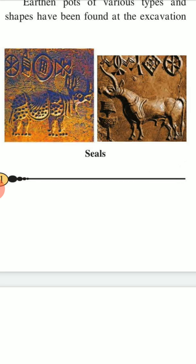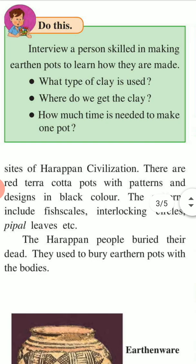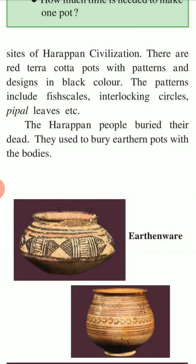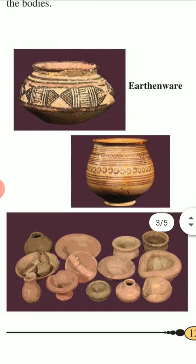You can see the seals here. You should do this activity: interview persons skilled in making earthen pots to learn how they are made — what type of clay is used, where they get the clay, and how much time is needed to make one pot. At the sites of Harappan civilization, there are red terracotta pots with patterns and designs in black color. The patterns include fish scales, interlocking circles, and people. The Harappan people worshipped their dead — they used to bury earthen pots with the bodies.